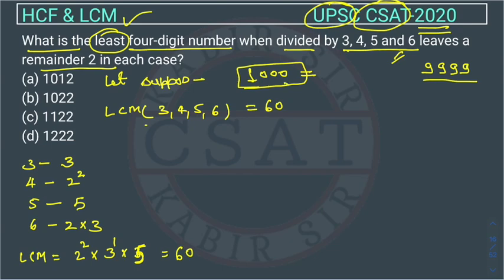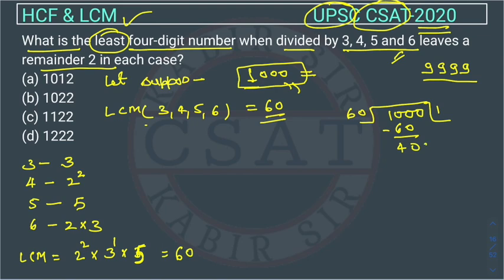Now we divide 1000 by 60. 60 goes into 1000 sixteen times, giving 960, and the remainder is 40. We are not able to divide 40 further by 60. So 40 is the remainder when 1000 is divided by 60. To reach the next multiple of 60, we need 60 − 40 = 20 more.